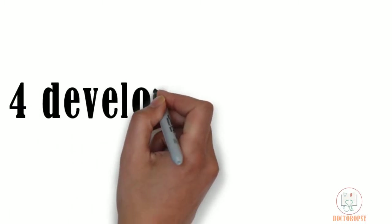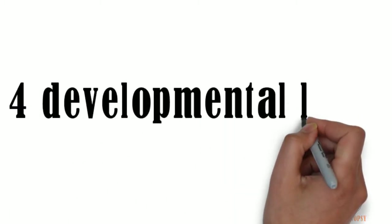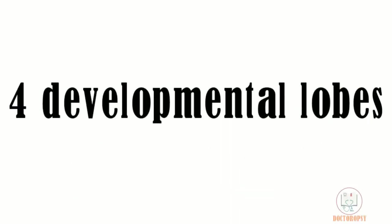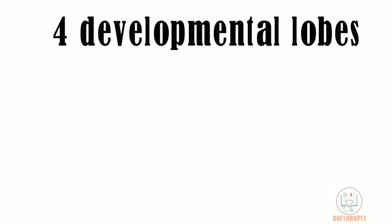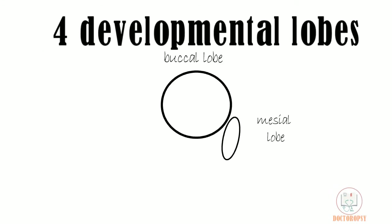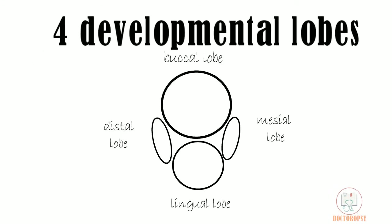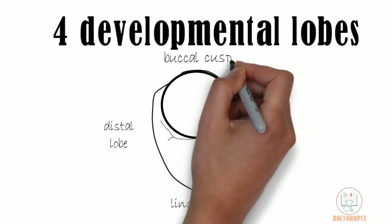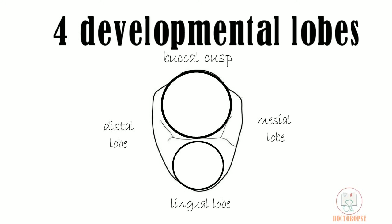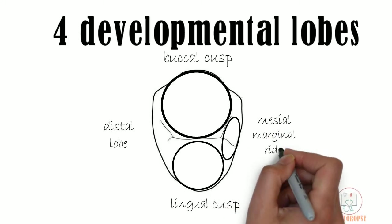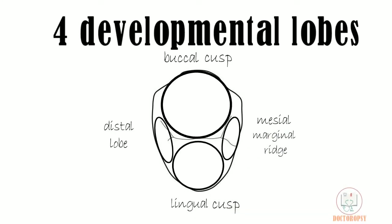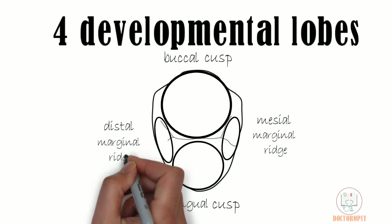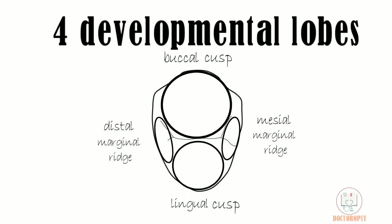The maxillary first premolar develops from four developmental lobes: mesial, buccal, distal, and lingual. The buccal lobe forms the buccal cusp, the lingual lobe forms the lingual cusp, the mesial lobe forms the mesial marginal ridge, and the distal lobe forms the distal marginal ridge.